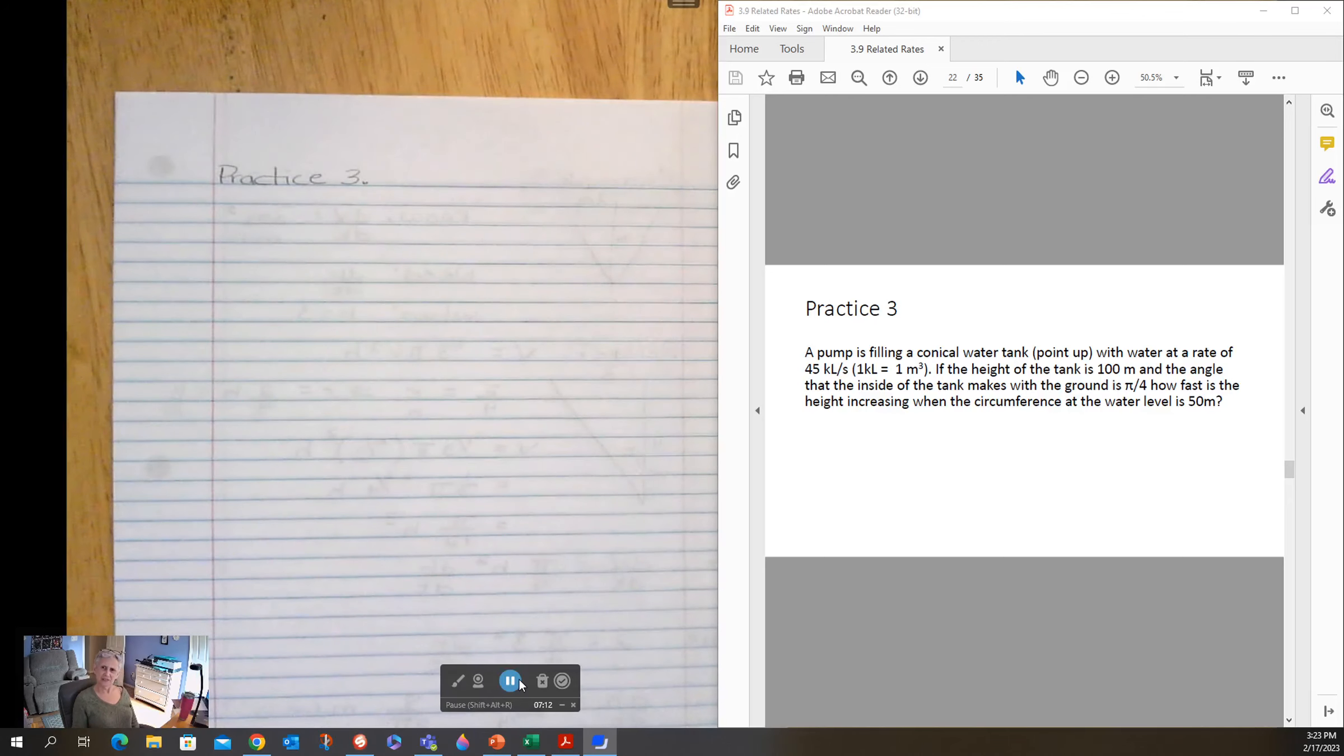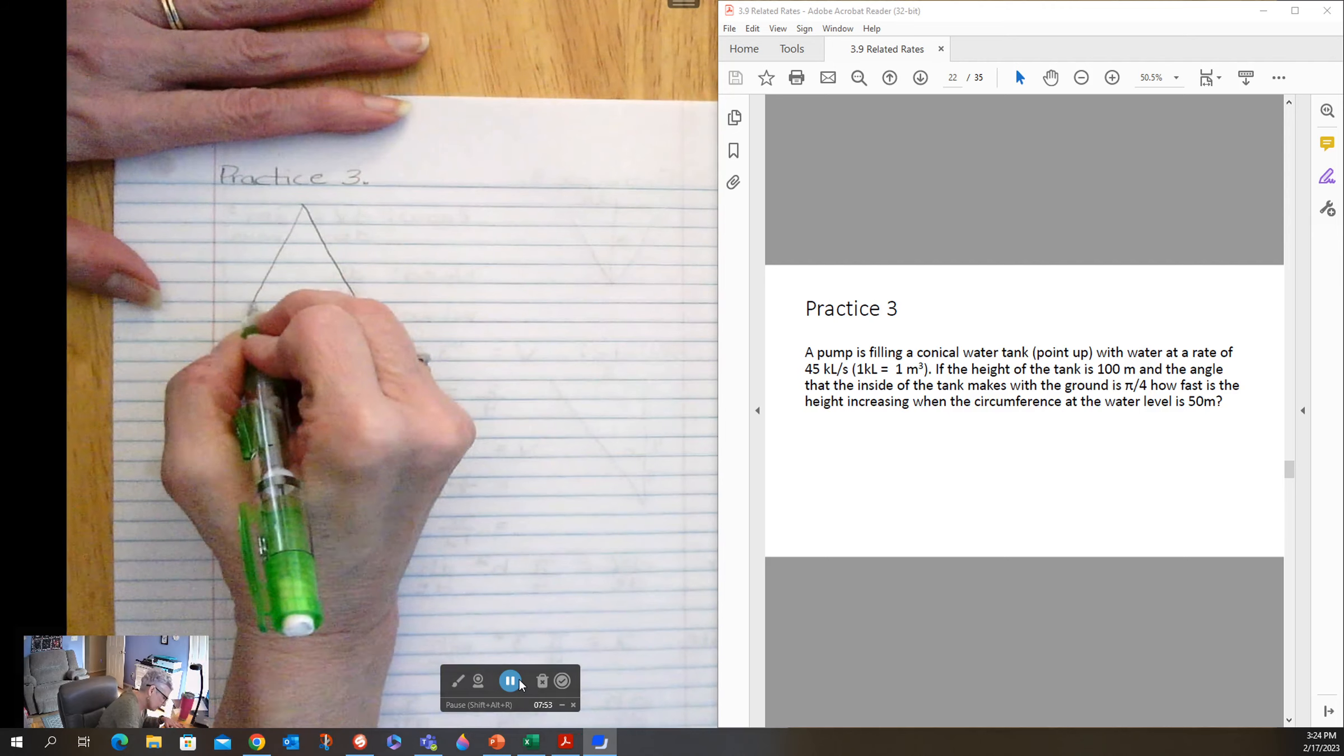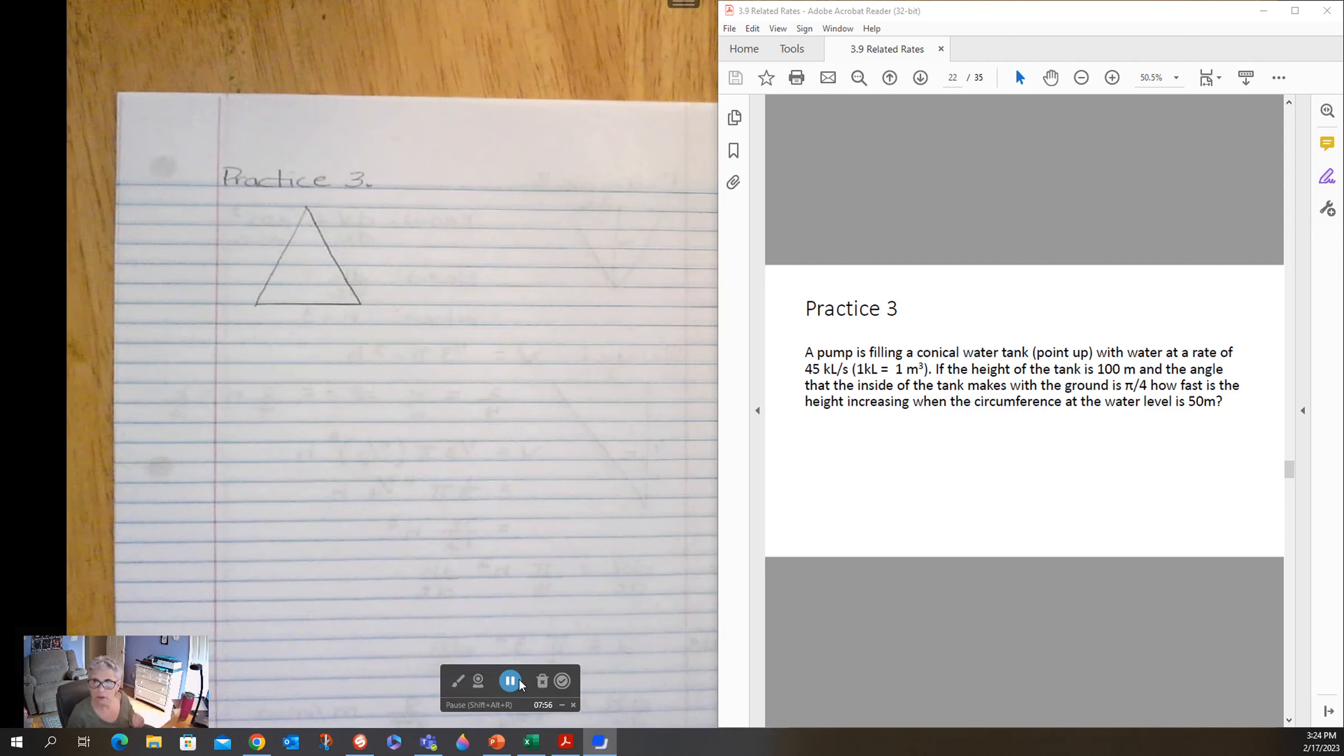Practice three is different. This time our cone has its point up, and it's filling at a rate of 45 kiloliters per second, which is one cubic meter. If the height of the tank is 100 meters and the angle the inside of the tank makes with the ground is pi over four, how fast is the height increasing when the circumference at the water level is 50 meters. Wow, they've thrown some little issues in here. So let's draw our cone, but we're just going to draw a triangle because if I were to draw a cone it wouldn't look that pretty. And the height of the cone is 100.